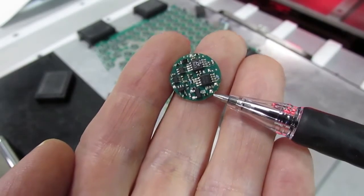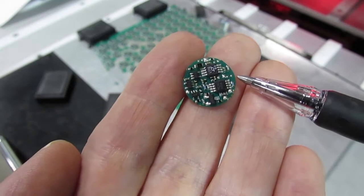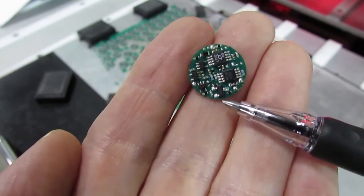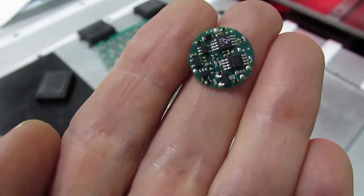So we can hold very tight tolerances on the finished assembly size, place components extremely close to the edge of the board, and maximize the use of board space in very small PCB assemblies.